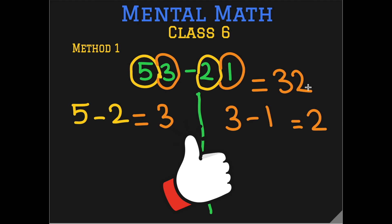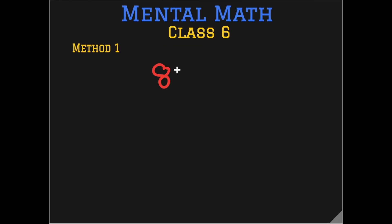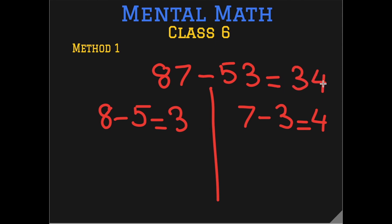Simple isn't it? Let's do another question. 87 minus 53. Split the question. Subtract the tens separately. 8 we get from 87. 5 we get from 53. The tens part and the ones part 7 and 3. So 8 minus 5 is 3. 7 minus 3 is 4 and our answer is 34. So we subtract the tens separately and the ones separately and we get our final answer.